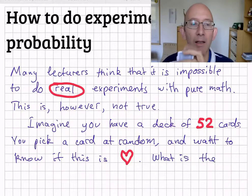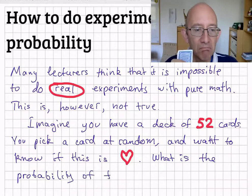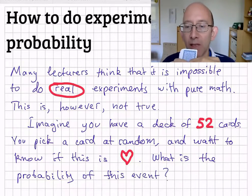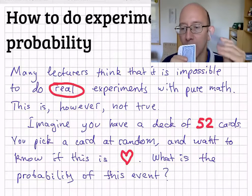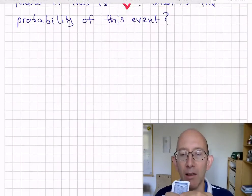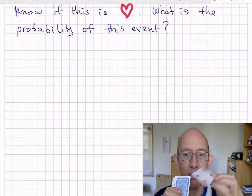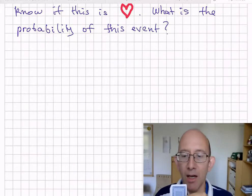Right? So put it back in the middle. And now, to compute the probability of this event, I draw another card. Let's draw another card and see what it is. And that's a heart again. And I don't know, let's draw another one. This is four of hearts again, so it's a heart.